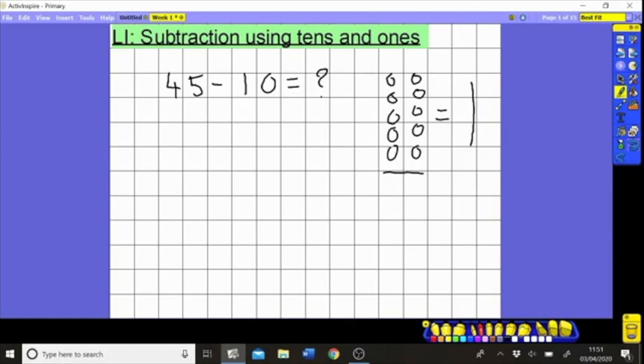To start properly we need to draw out a tens and ones chart. We want to draw our whole number. There are four tens in 45 and there are five ones.